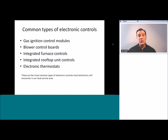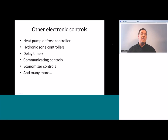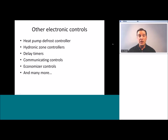Some of the common types of controllers we're going to find in equipment are primarily gas ignition control modules and oil primaries, blower control boards for forced air furnaces, integrated furnace controls, integrated rooftop control modules for package rooftop units, and electronic thermostats. Additional types include heat pump defrost controllers, refrigeration defrost controllers, hydronic zone controllers in boiler systems, delay timers, communicating controls — which is a whole other aspect we'll talk about at the end of this lesson — economizer controls, and many more.